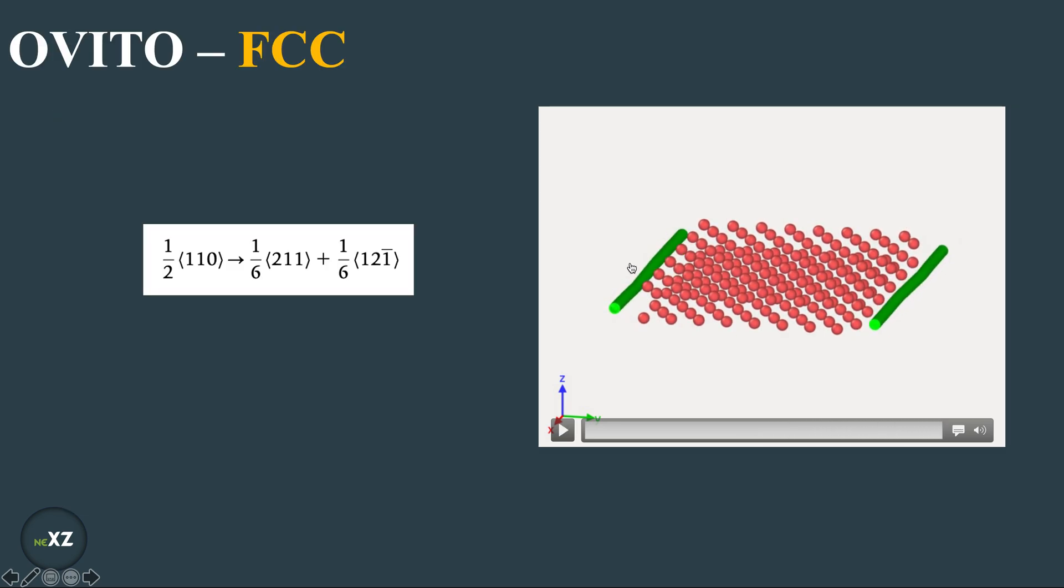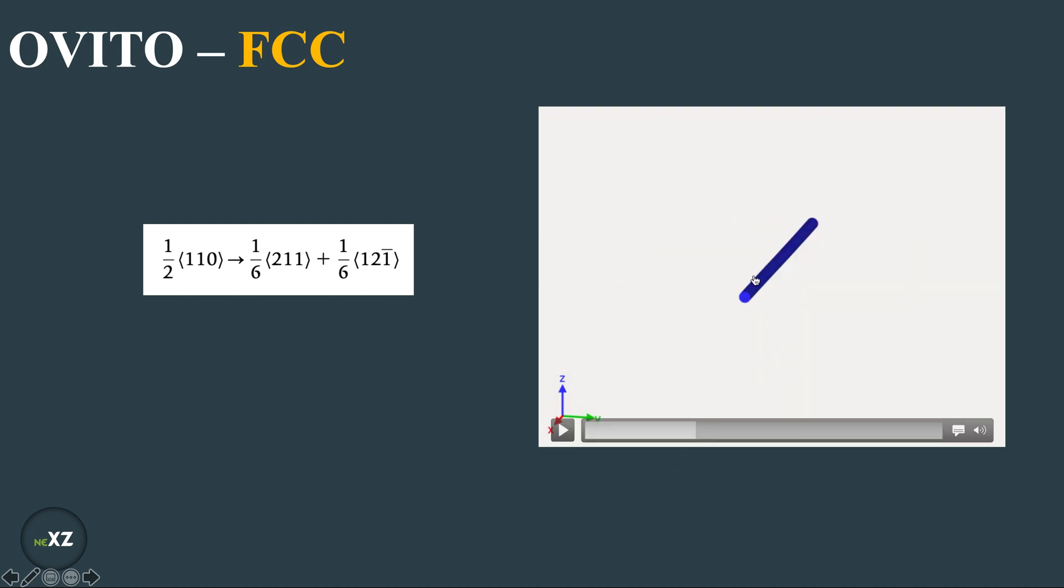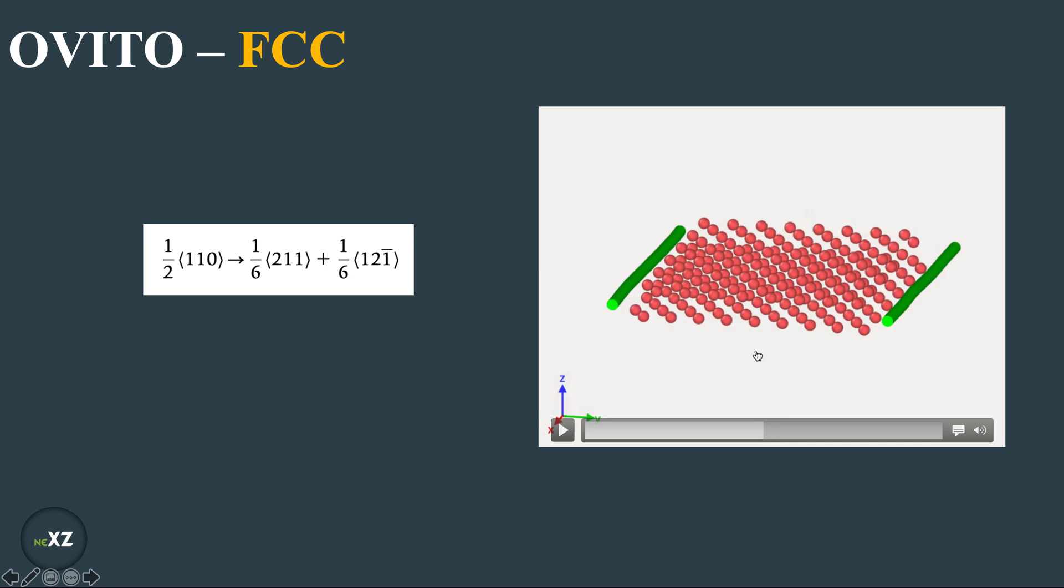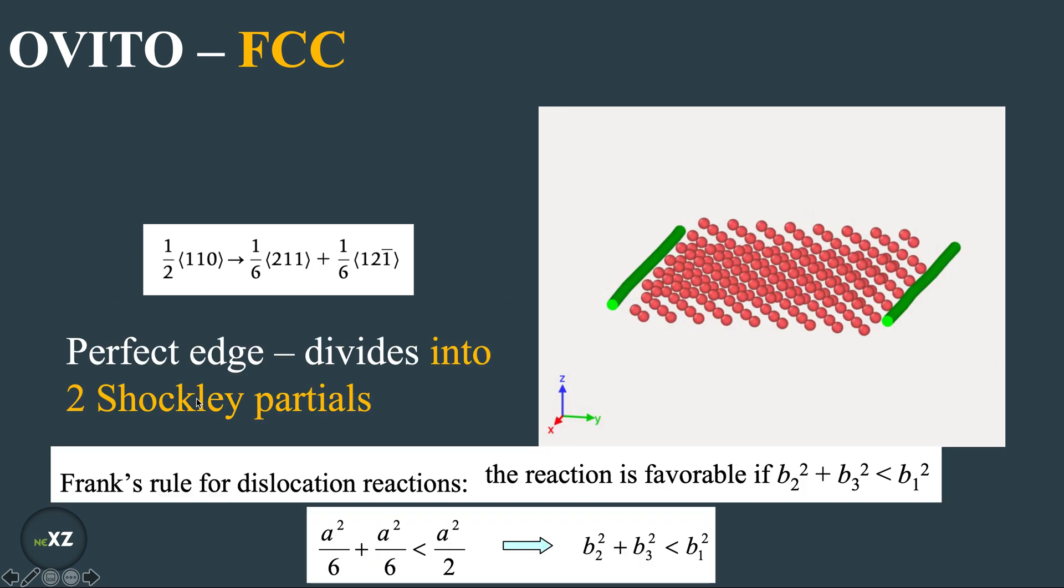So this is the reaction. So this is the perfect dislocation which splits into two Shockley partials which are shown here and this is possible by Frank's rule.